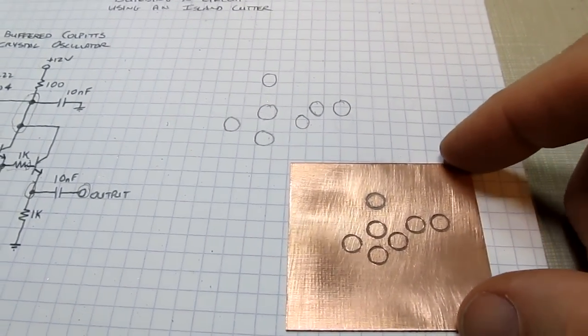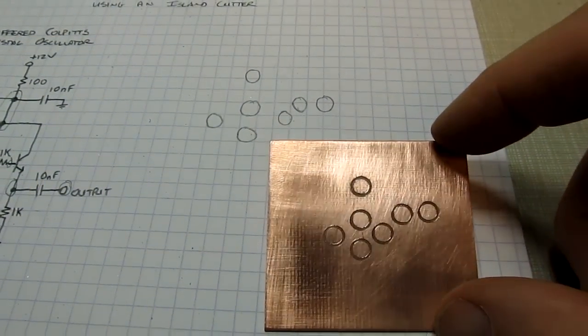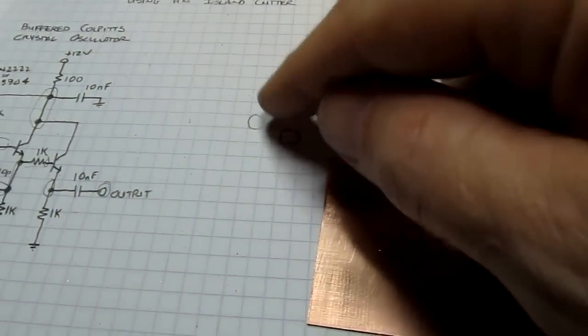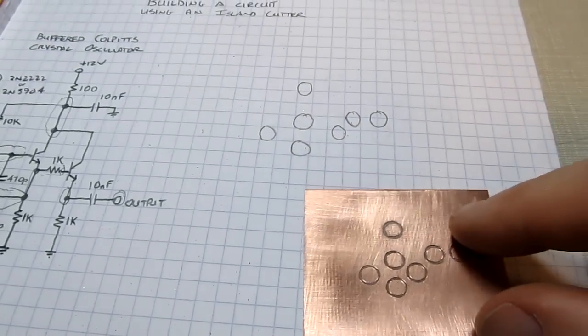And there's our finished board. The lands all cut, basically matching the pattern that we just kind of free-handed here.